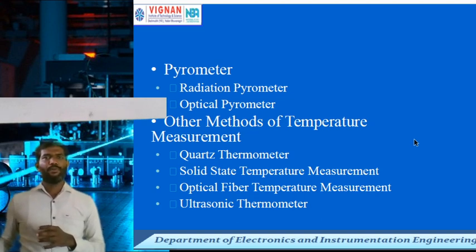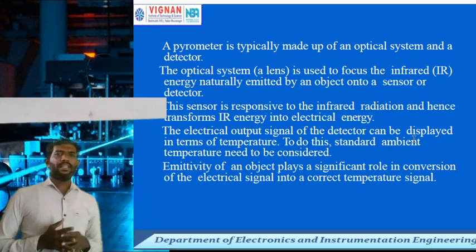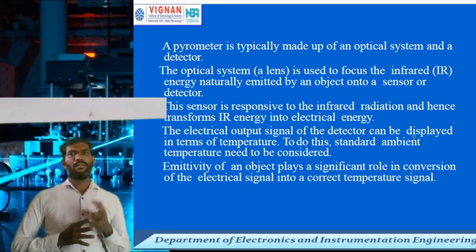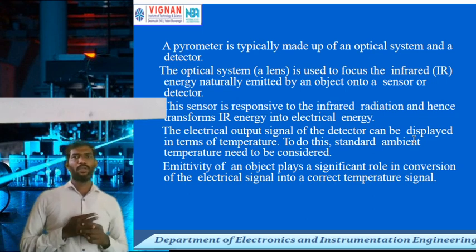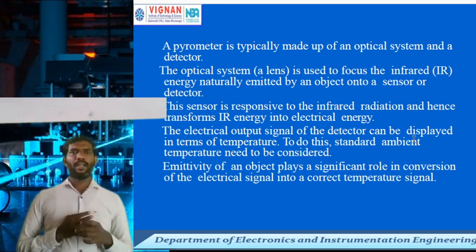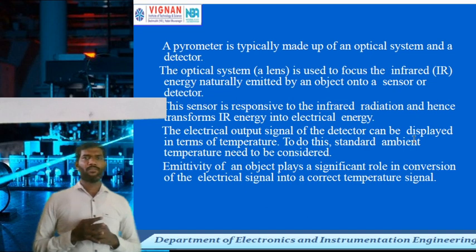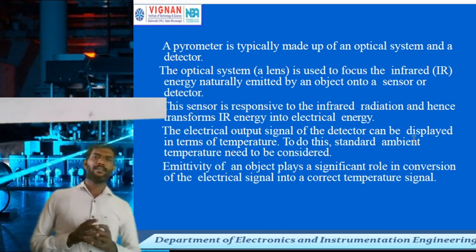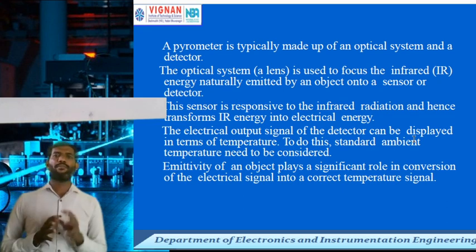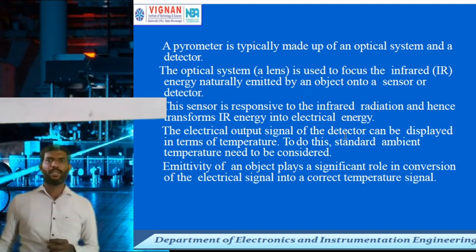Let us see the types of optical pyrometer and radiation pyrometer. A pyrometer has different internal parts — the optical system and detector are very important. The lens system, called the optical system, is used to focus the infrared energy naturally emitted by the object onto the sensor array detector. The sensor responds to infrared radiation, and that IR radiation energy is converted into electrical energy. The electrical output signal of the detector is then displayed in terms of temperature.